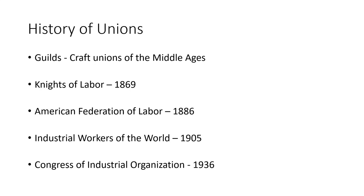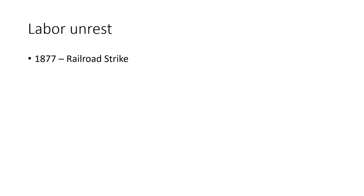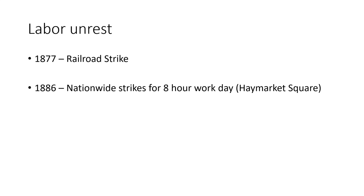Why were so many labor unions being created in the late 1800s and early 1900s? There was lots of labor unrest — one strike after another, some very violent and notable. There was a railroad strike in 1877 that completely shut down the rail system, and a series of nationwide strikes in 1886 calling for an eight-hour workday. During those 1886 strikes, there was a bombing in Haymarket Square in Chicago. A bomb went off and killed some people. It was never quite clear who set off the bomb — whether it was the labor unions or people against them.